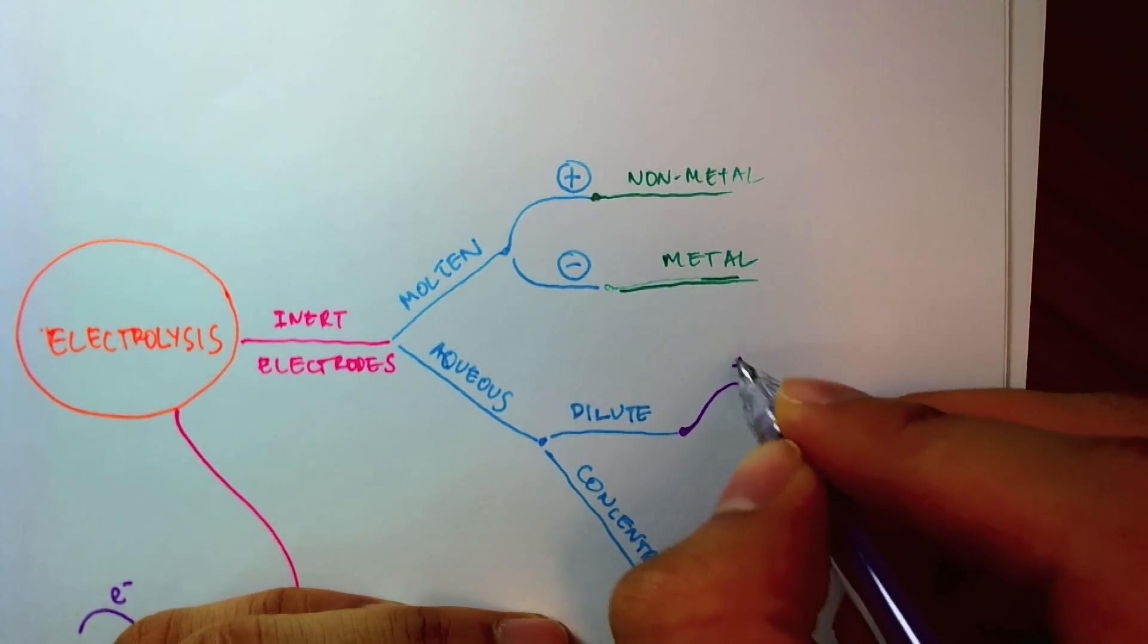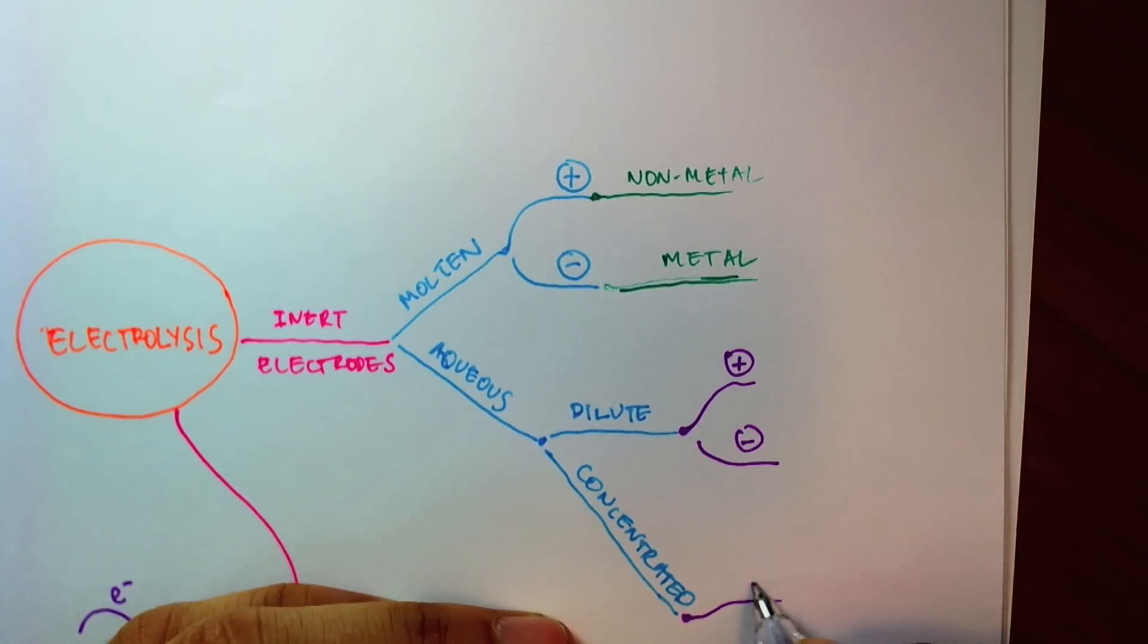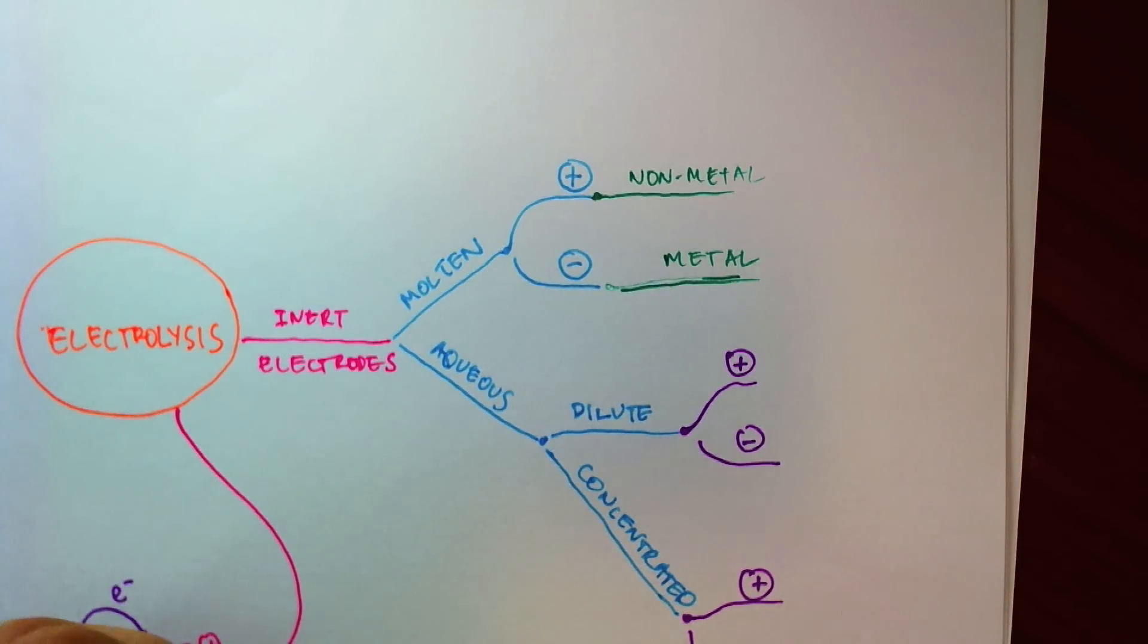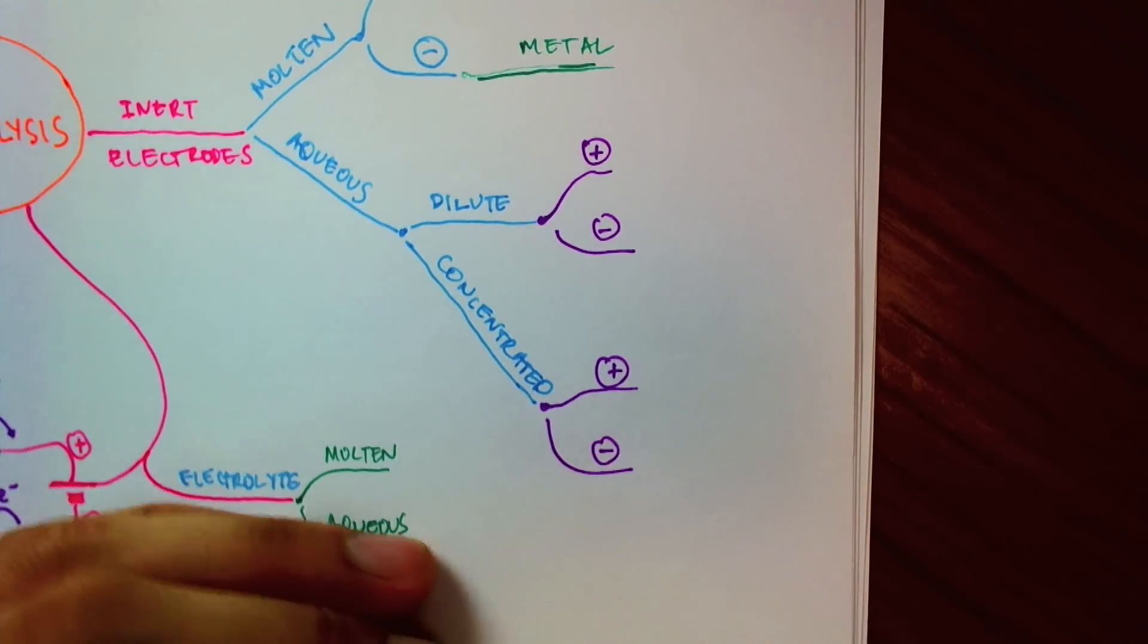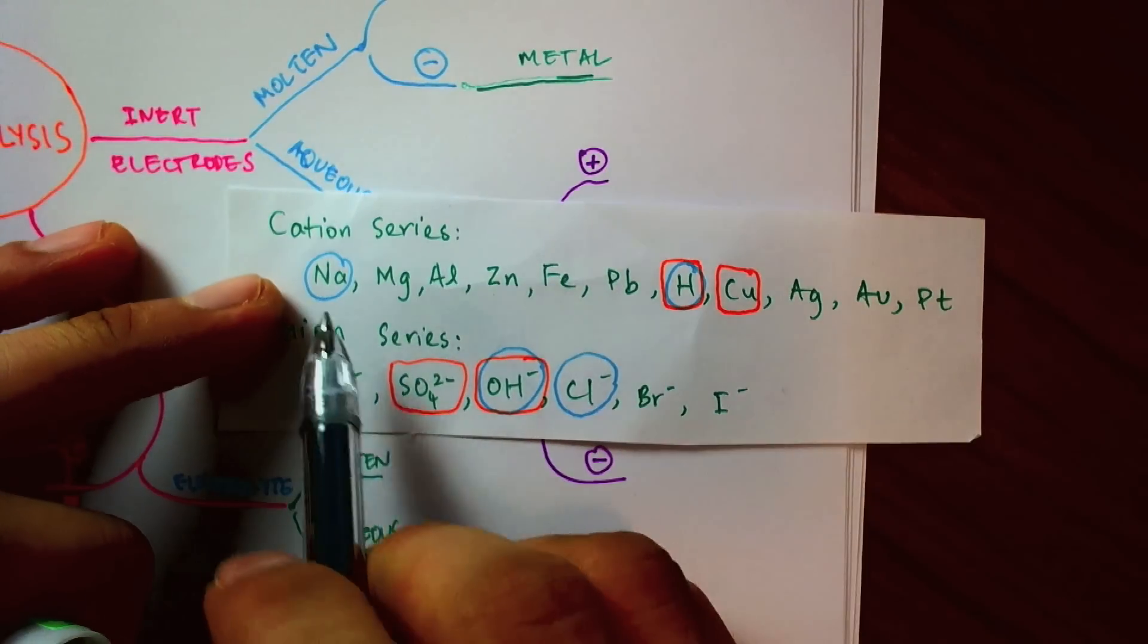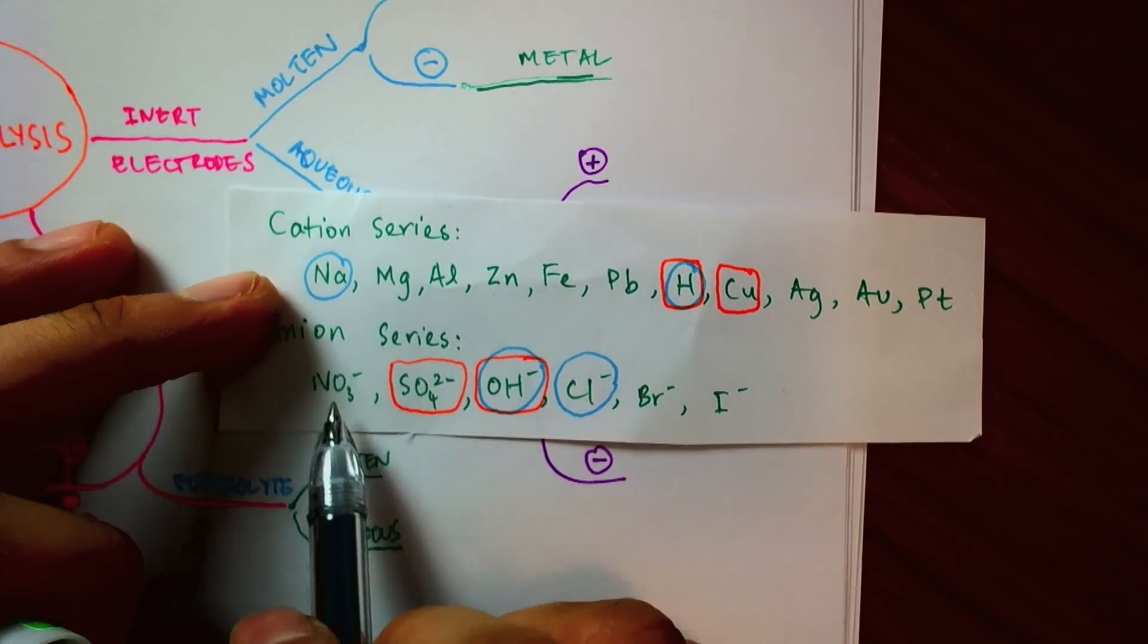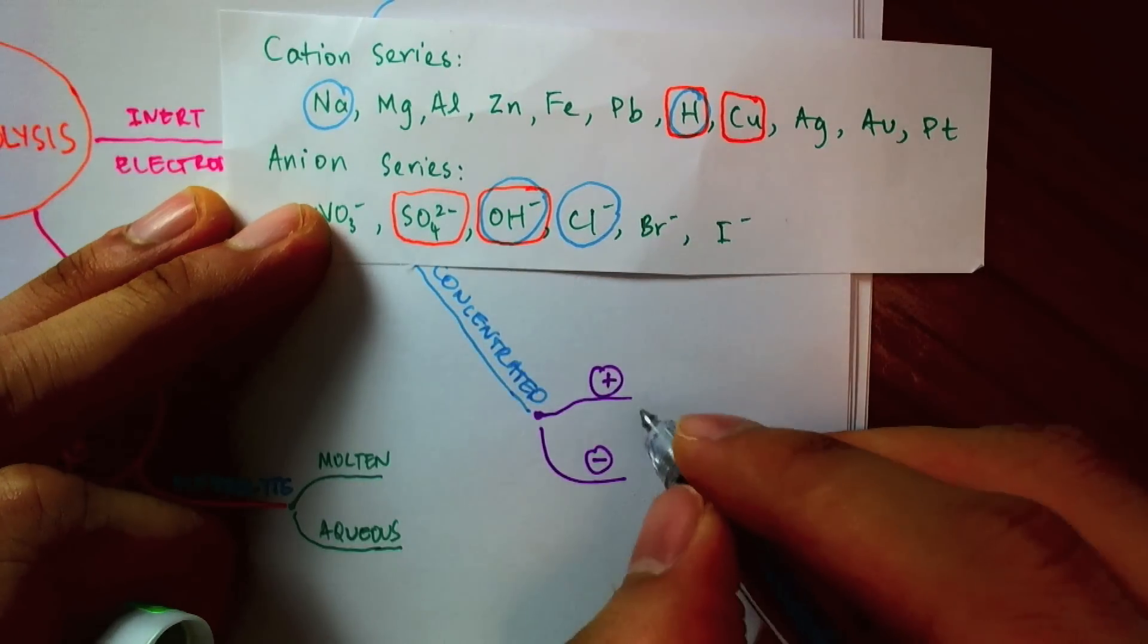So dilute anode, cathode, concentrated anode, cathode. For the concentrated solution, we had always chosen the less reactive one. So here's the reactivity series again. Most reactive to least reactive. Most reactive to least reactive. And we'd always choose the less reactive one.